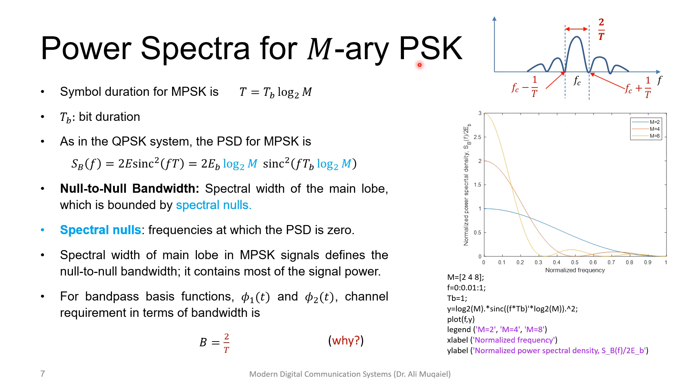Remember that the bandwidth here is infinity, but usually we talk about the null-to-null bandwidth. What is the null? The null is where the frequency or the PSD is equal to zero. Let's look at this. For example, this is kind of sketching sinc squared. The bandwidth, if you continue it, will take forever, so usually we discuss the main lobe, the first lobe. So we call the bandwidth the main lobe bandwidth, or the null-to-null bandwidth. For the case of MPSK, the null-to-null bandwidth will be 2 over T. So the bandwidth requirement is 2 divided by T.